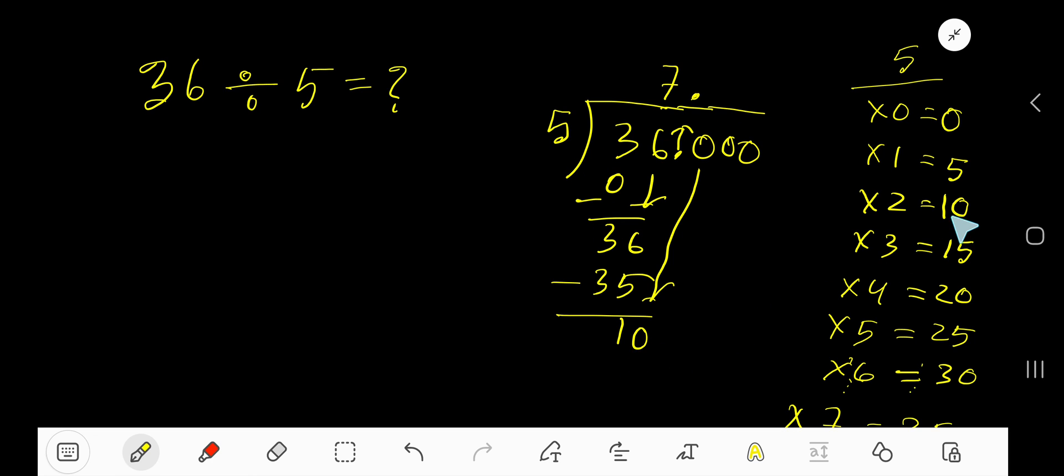5 goes into 10, how many times? 5 goes into 10, 2 times. Write 2, 2 times 5, 10. Subtract, you are getting 0. So 7.2 is your answer actually.